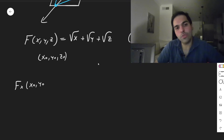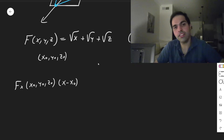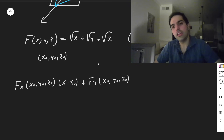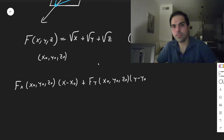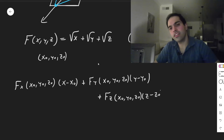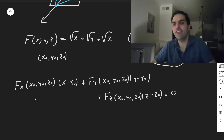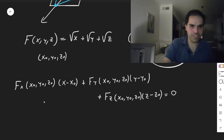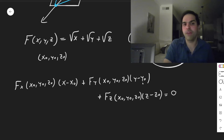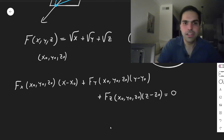That equation is: fₓ(x₀, y₀, z₀)·(x − x₀) + f_y(x₀, y₀, z₀)·(y − y₀) + f_z(x₀, y₀, z₀)·(z − z₀) = 0. How do we get this? If you have a level surface, the gradient is perpendicular to it, so the dot product of the gradient with the vector (x − x₀, y − y₀, z − z₀) equals zero. That's how to derive it.